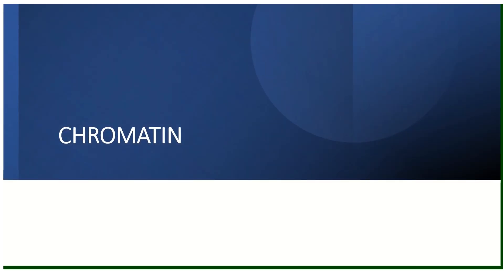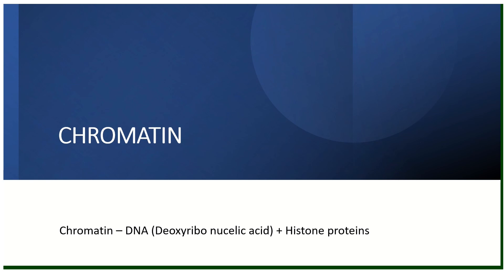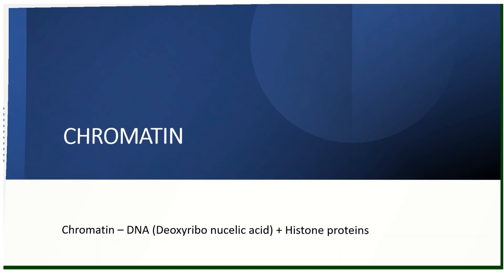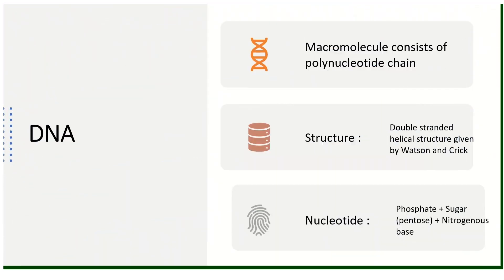Now let's discuss chromatin. Chromatin is the combination of DNA and histone proteins. DNA stands for deoxyribonucleic acid. DNA is a macromolecule consisting of a polynucleotide chain — 'poly' means many, so many nucleotides form one DNA molecule. That is why it is called a macromolecule, meaning a large molecule.